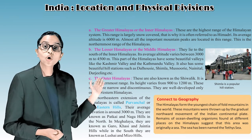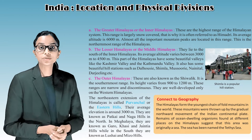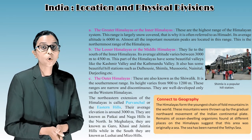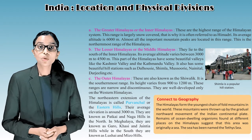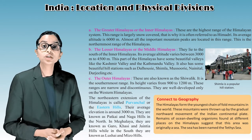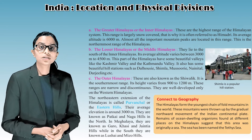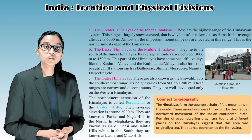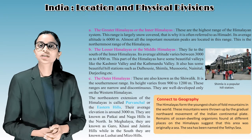The third range is the Outer Himalayas, also known as the Shivaliks. It is the southernmost range, with heights varying from 900 to 1,200 meters. These ranges are narrow and discontinuous, well developed only in the western Himalayas. The northeastern extension of the Himalayas is called Purvanchal or the Eastern Hills, with an average elevation of around 3,000 meters. They are known as Patkai and Naga Hills in the north, Garo, Khasi, and Jaintia Hills in Meghalaya, and Lushai and Mizo Hills in the south.